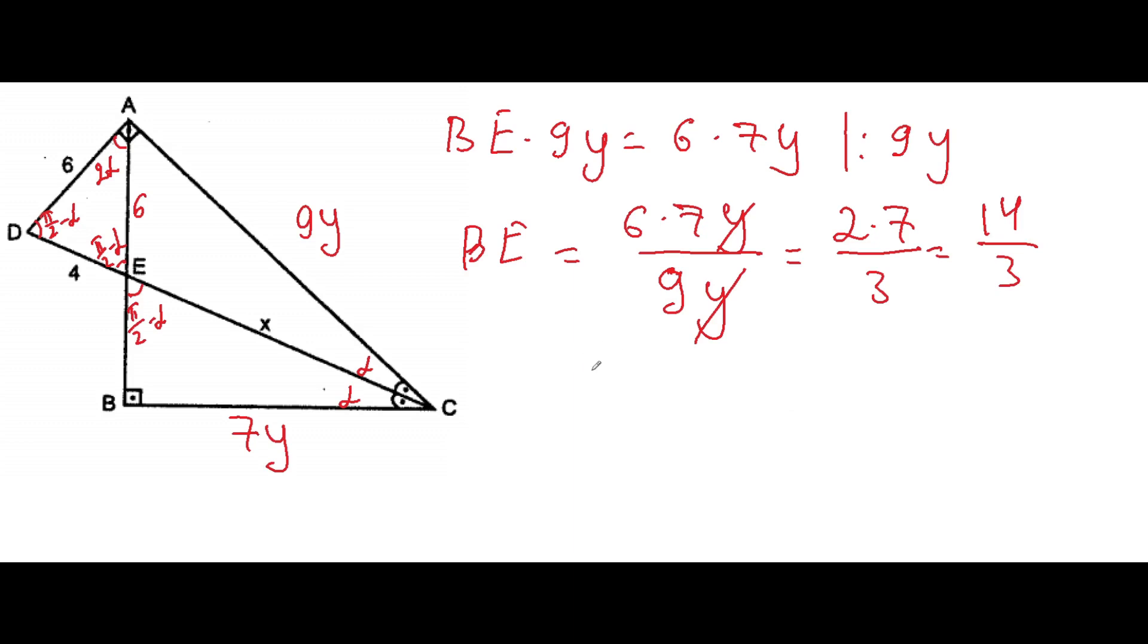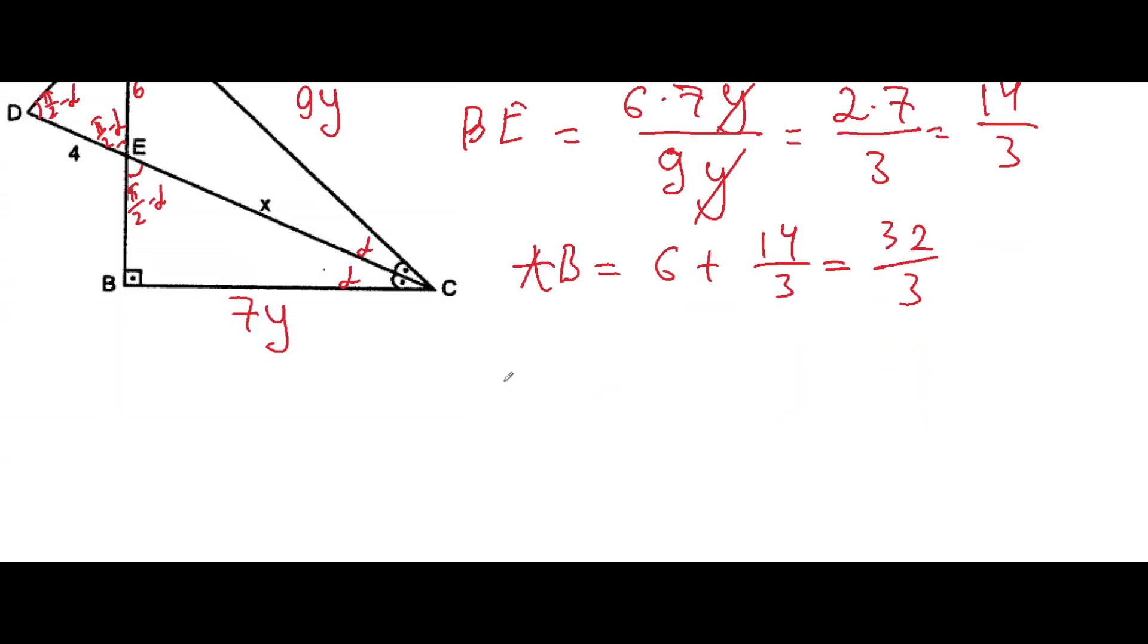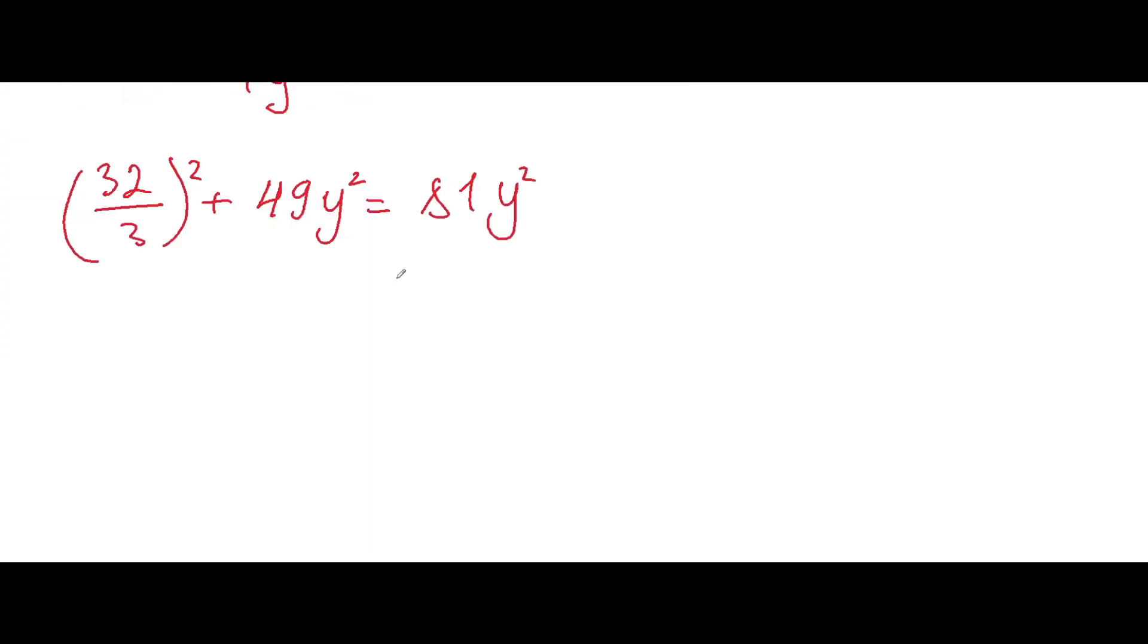And here from the Pythagorean theorem we can find out y. From the triangle ABC we can see that AB. Let me find out AB here. 6 plus 14 over 3. It will be 32 over 3. So we have AB found it. And we will square it. 32 over 3 squared plus 7y squared is 49y squared. We will be equal to 9y squared is 81y squared. We can subtract from both sides this 49y squared. And we will get here 32y squared.